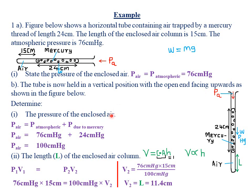The total pressure P_air equals atmospheric pressure plus pressure due to the mercury column. Atmospheric pressure is 76 cmHg and the mercury column length is 24 cm, so its pressure is 24 cmHg. Therefore P_air = 76 + 24 = 100 cmHg.